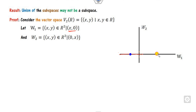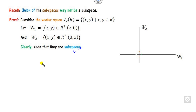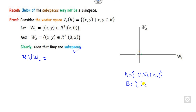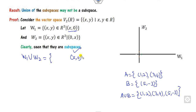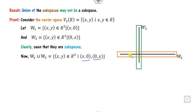Why are they subspaces? If you take any two elements on the x-axis and form a linear combination, all those elements still belong to W1, so it is a subspace. Similarly, any two elements on W2 again form a subspace. Now, the union W1∪W2 consists of all points of the form (x, 0) or (0, x) — that is, all points on the x-axis (orange) as well as the y-axis (green).